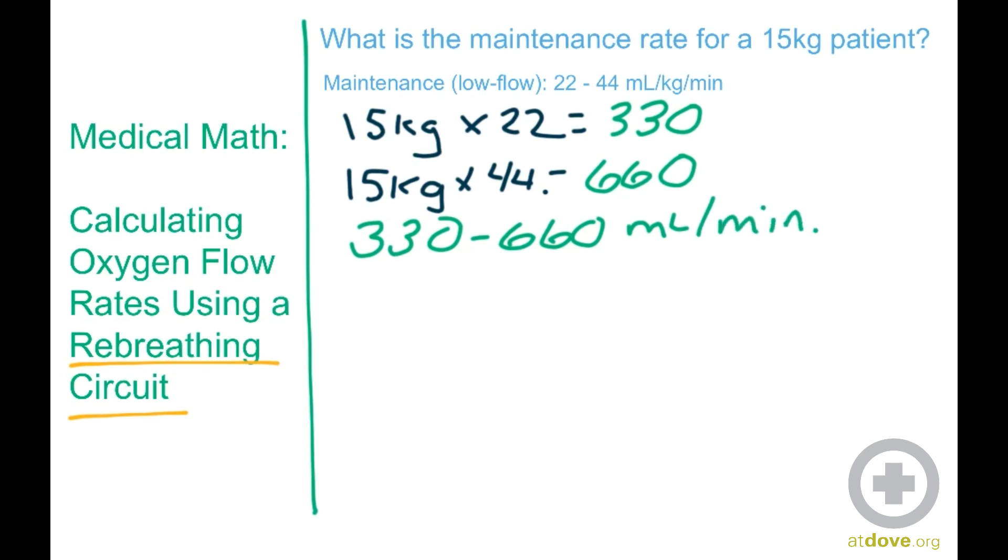And to show you where I got those numbers, 15 kg is the weight of our patient, and that is a set number in both formulas. And that next number is the low range of our oxygen flow rate, 22, is that number here. And the high range is 44, and I put it in there.